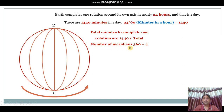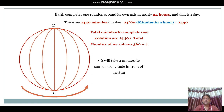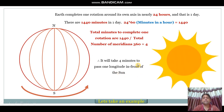Dividing 1440 minutes by 360 total meridians gives us 4. This means it takes 4 minutes to pass one longitude in front of the Sun. This is the basic formula we need to understand to calculate the time of any place — one longitude passes in front of the Sun within 4 minutes.